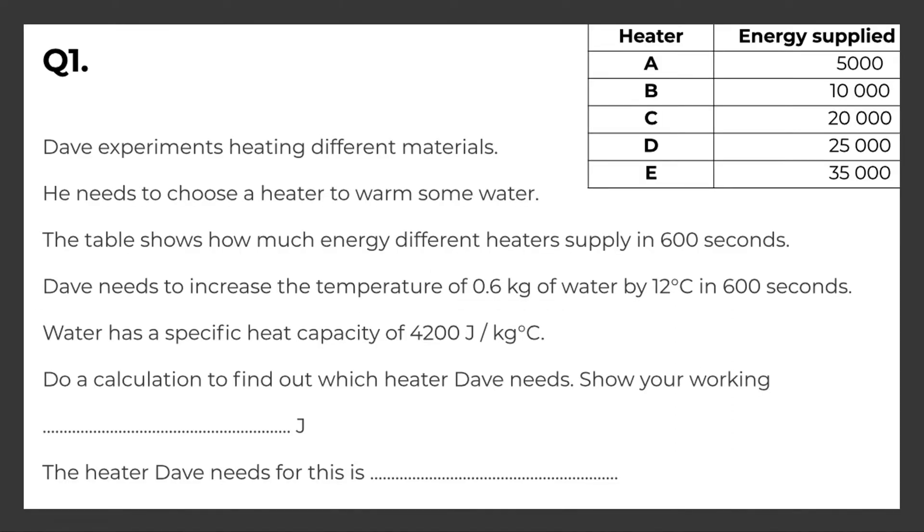So question one says Dave experiments heating different materials. He needs to choose a heater to warm some water. The table shows how much energy different heaters supply in 600 seconds. Here's the table. Dave needs to increase the temperature of 0.6 kilograms of water by 12 degrees Celsius in 600 seconds. Water has a specific heat capacity of 4200 joules per kg per degree Celsius.